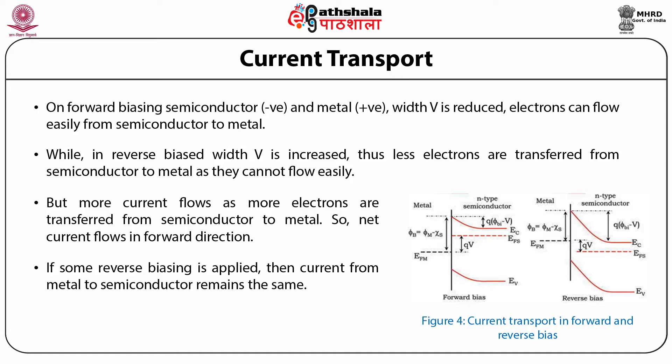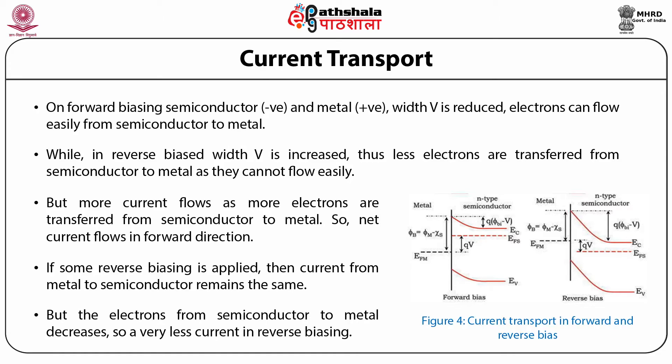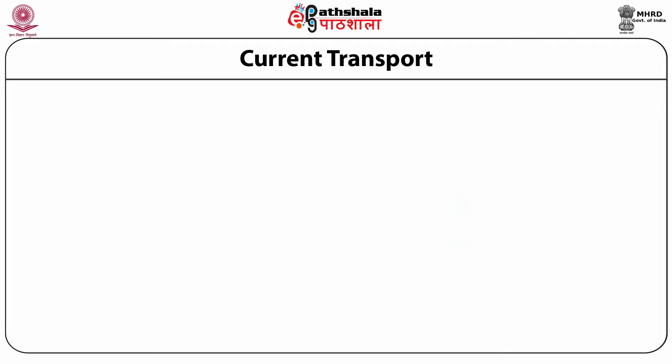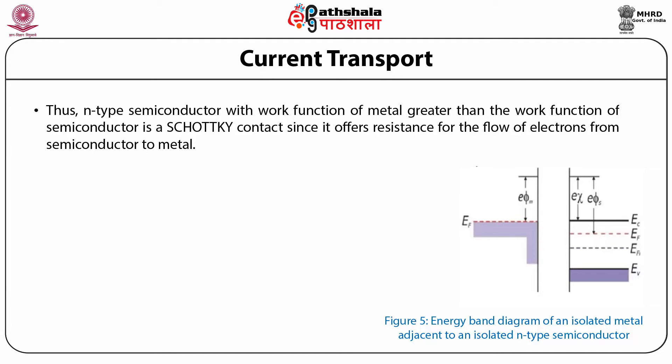In reverse biasing, the barrier width V is increased, so less electrons are transferred from semiconductor to the metal as they cannot flow easily. If some reverse biasing is applied, the current from metal to semiconductor remains the same, but the electrons from semiconductor to metal decrease, so very little current flows in reverse biasing. Thus, N-type semiconductor with the work function of metal greater than the work function of semiconductor is a Schottky contact, since it offers resistance for the flow of electrons from semiconductor to the metal.